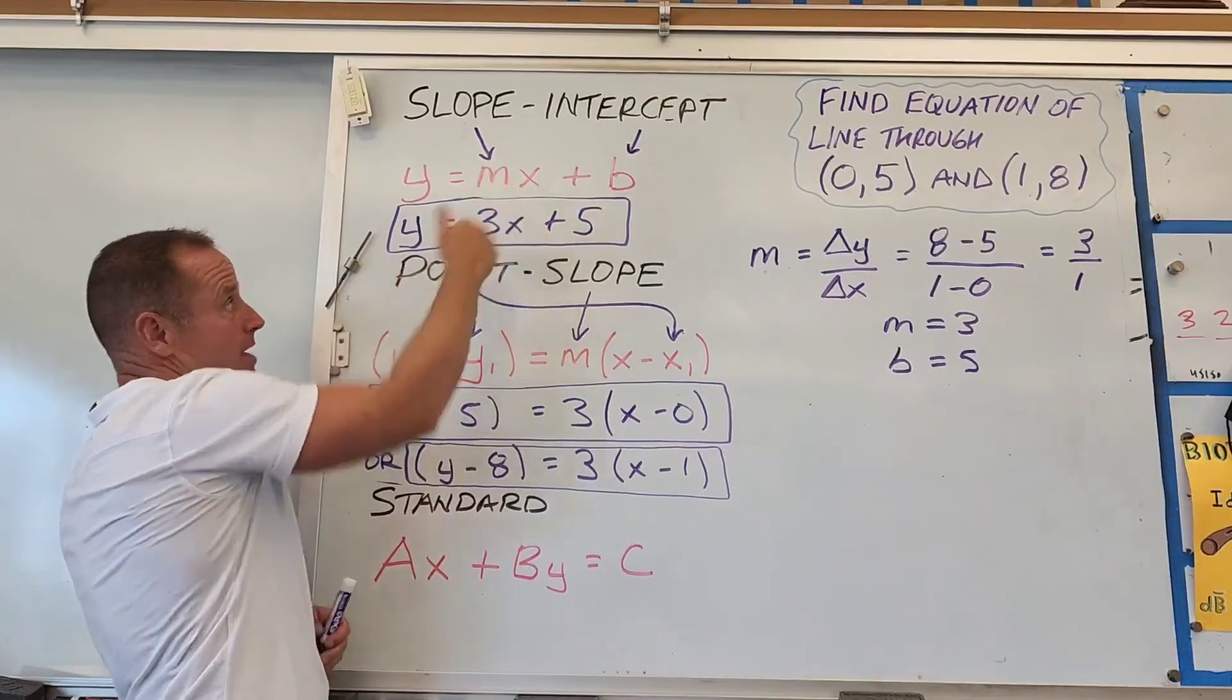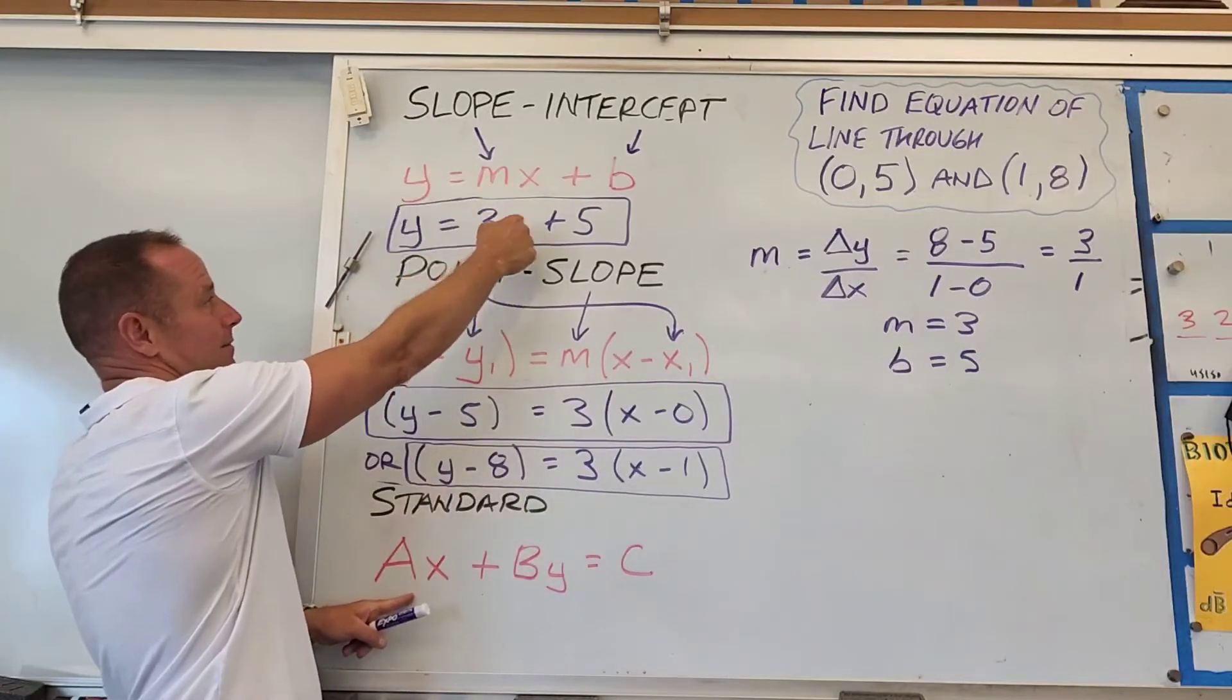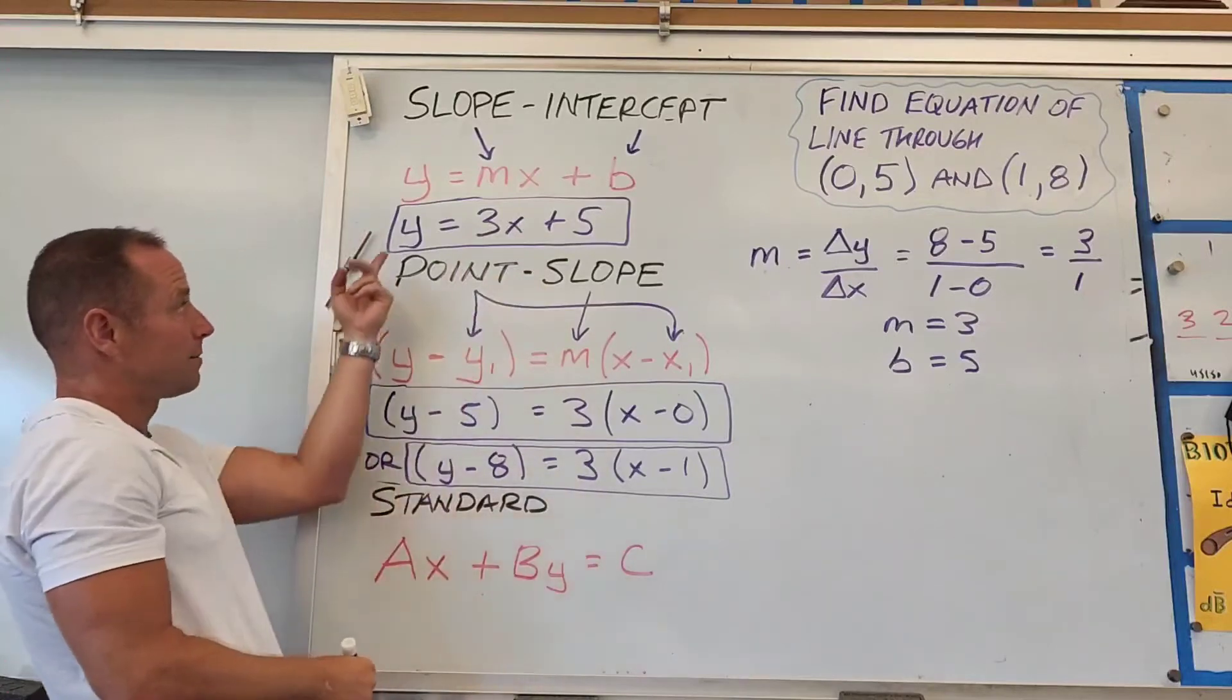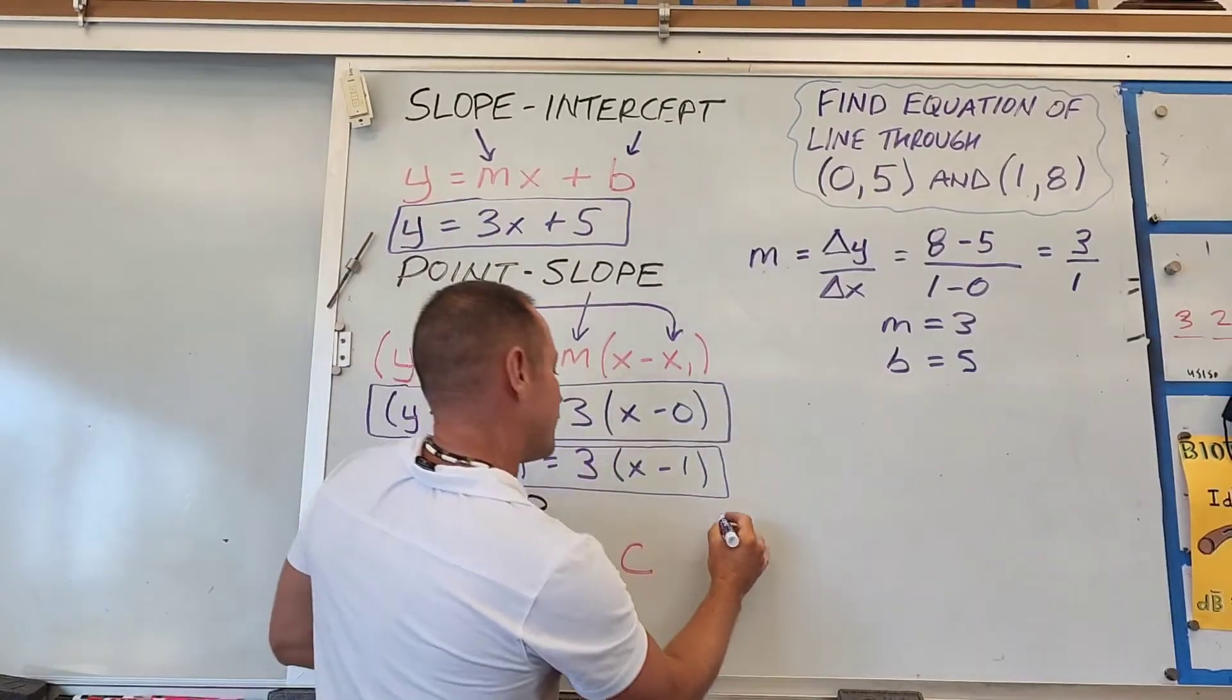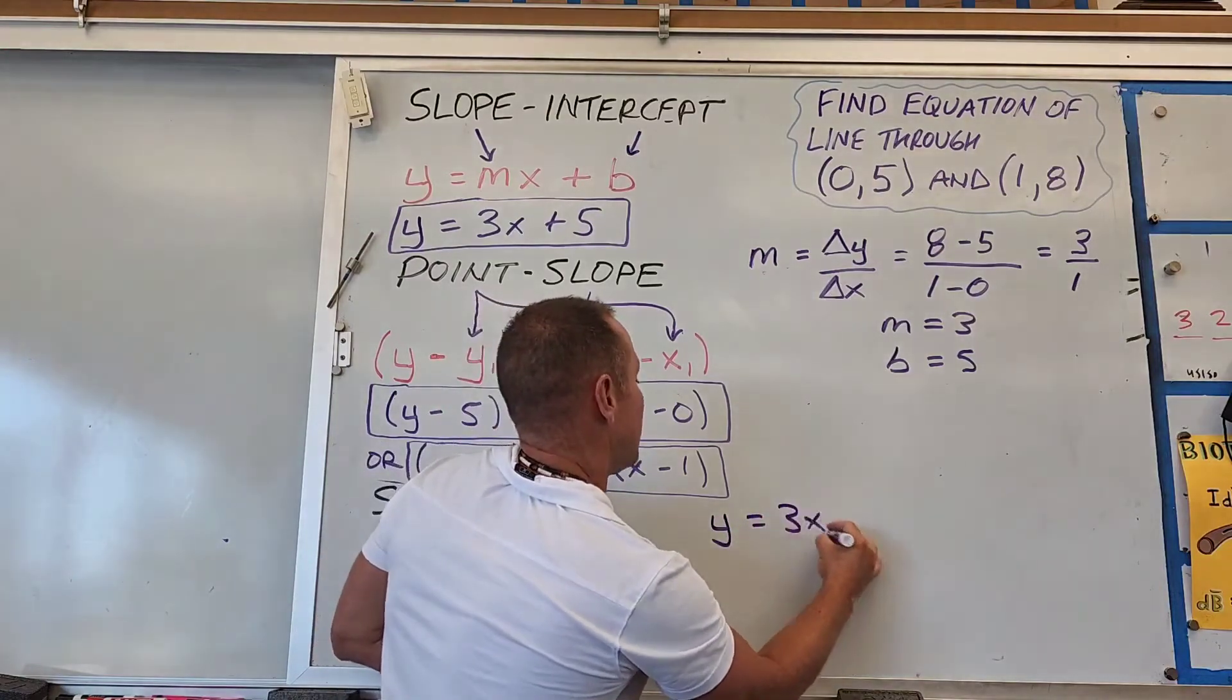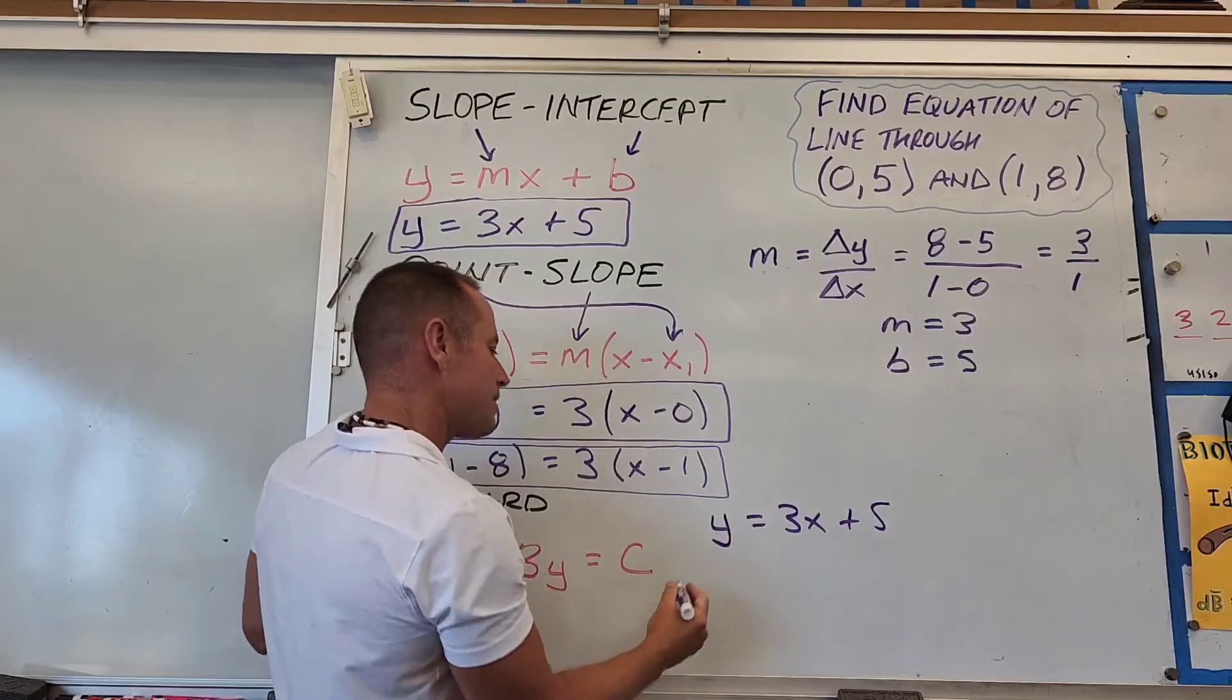If you already have the slope-intercept form, just bring the x term to the other side. Starting with y equals 3x plus 5, subtract 3x from both sides.